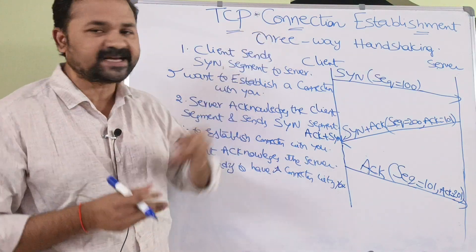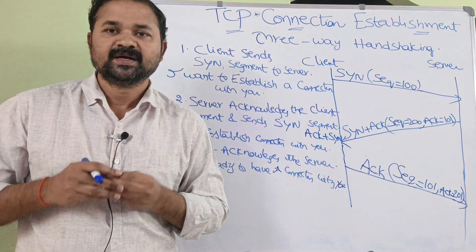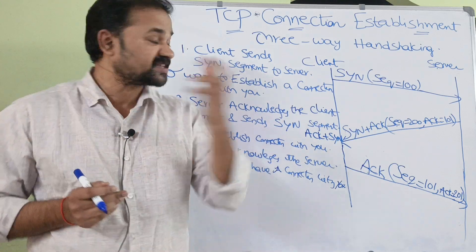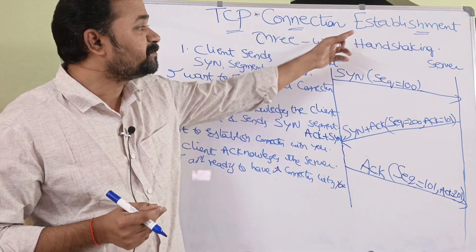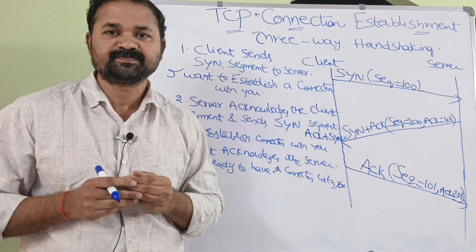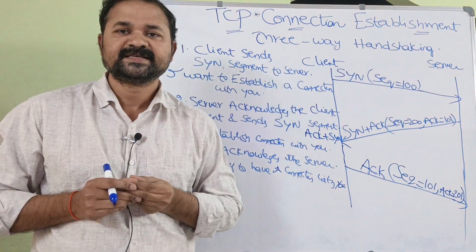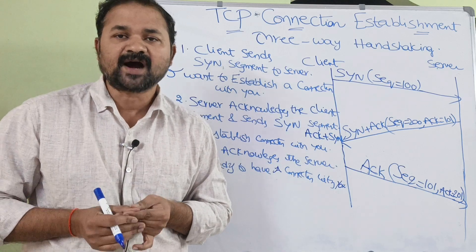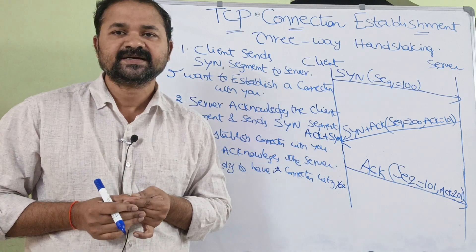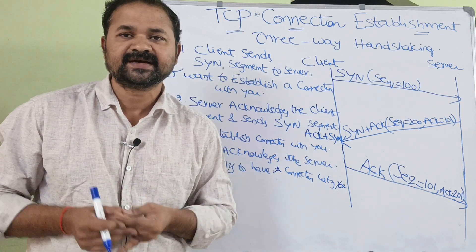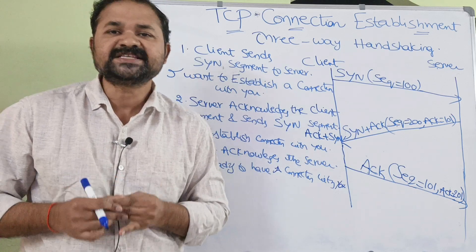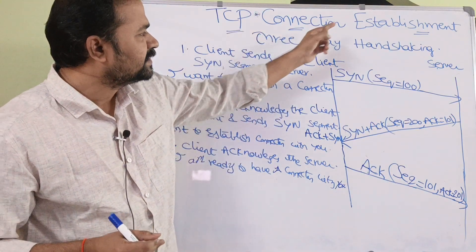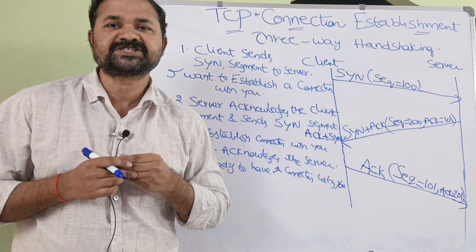TCP connection mainly involves three steps. The first one is TCP connection establishment, the second one is data transfer, and the third one is TCP connection termination. In this video, we are going to discuss TCP connection establishment.